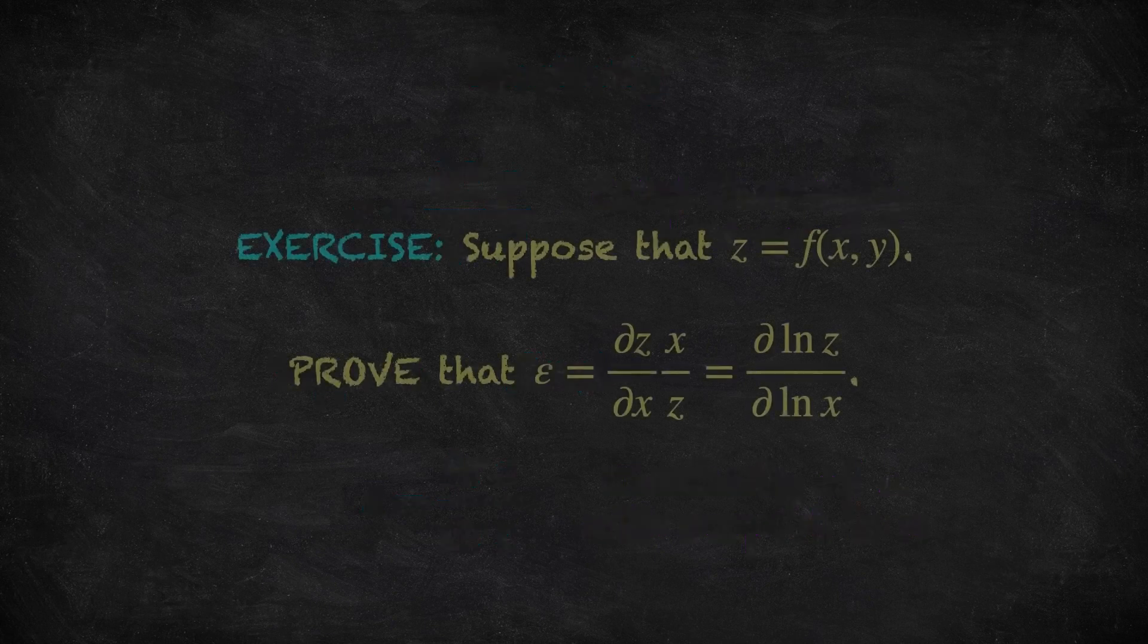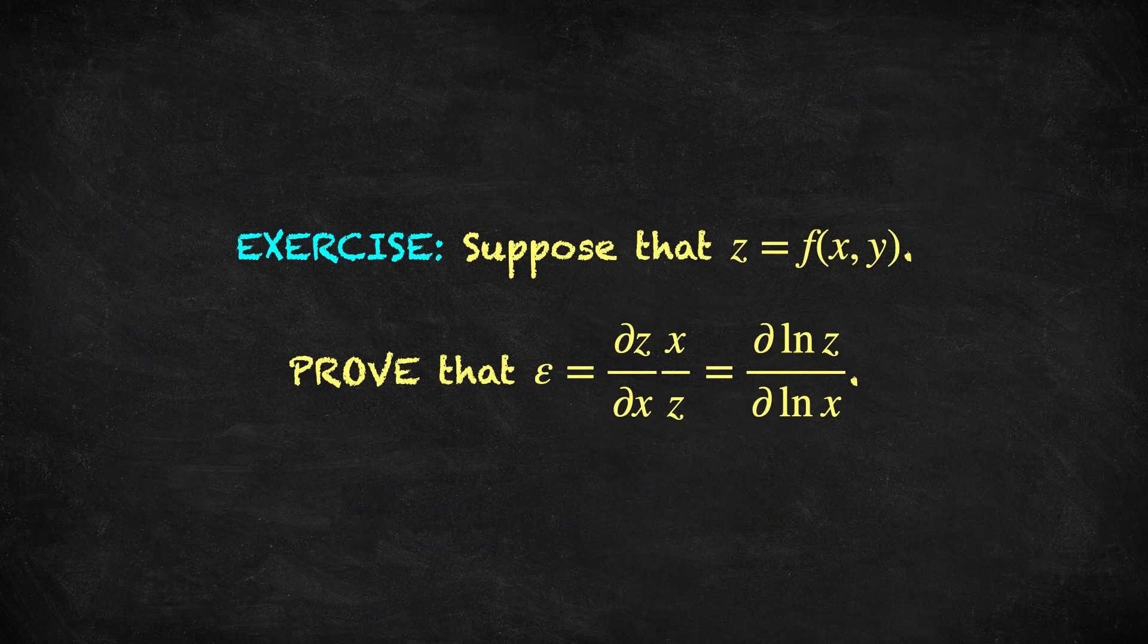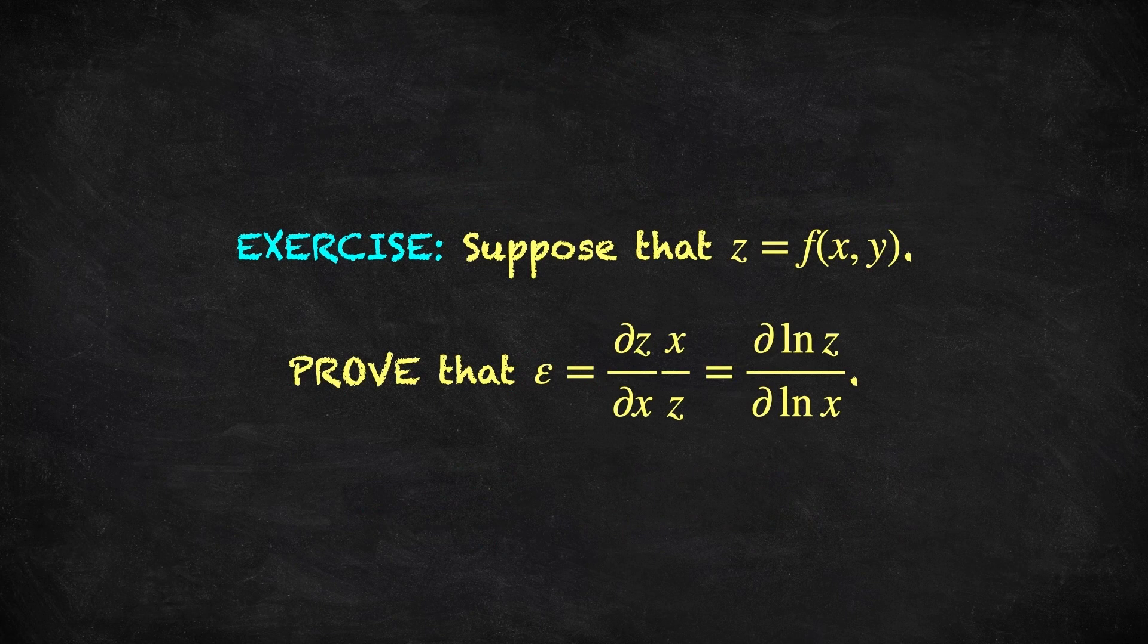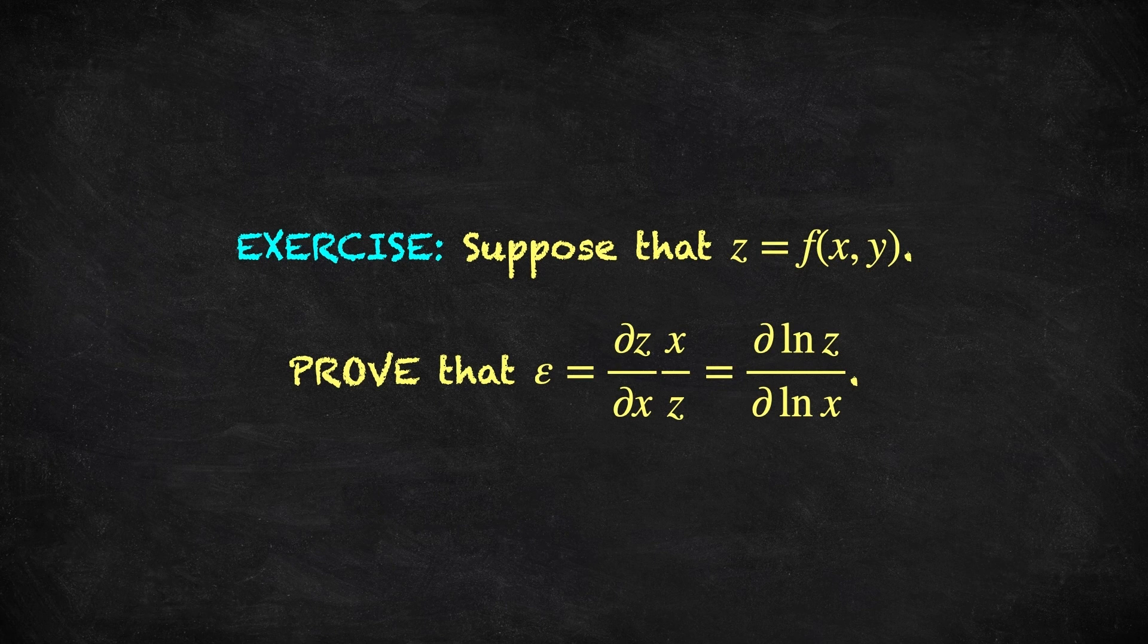Here is an exercise to attempt before watching the next video. This gives two different ways of calculating elasticity. You can take the partial derivative of Z with respect to X, and multiply this by X over Z. That's the way we've already introduced. Or, you can take logs, and take the partial derivative of the log of Z with respect to the log of X. These two formulae are in fact equal to each other. Have a go at proving this, and I'll show you the solution in the next video.